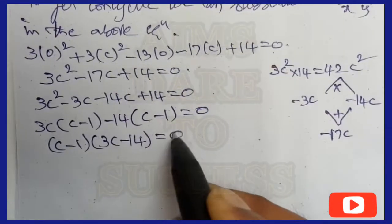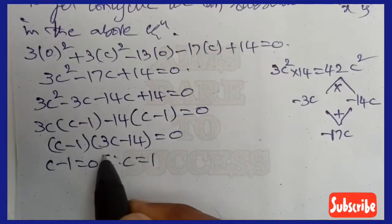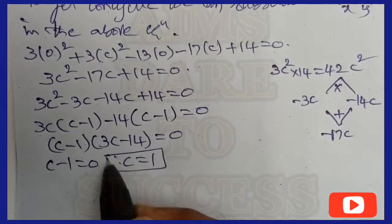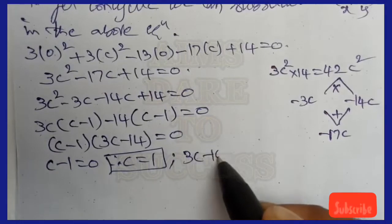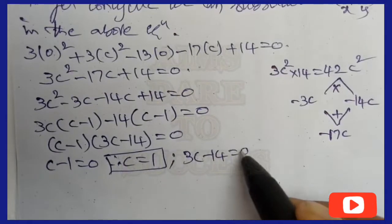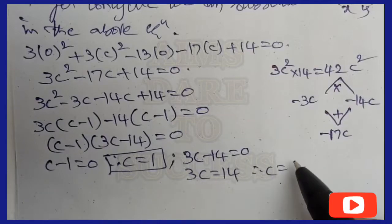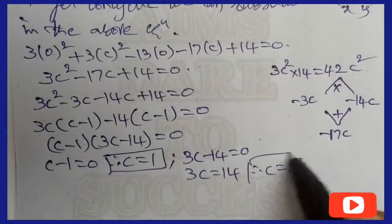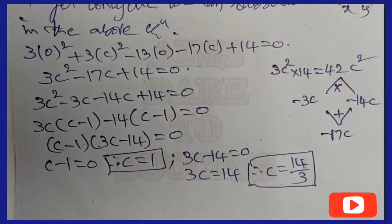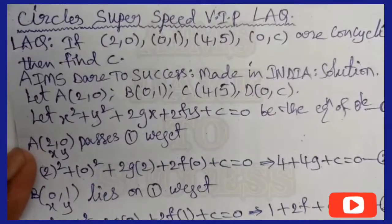Factorizing: 3c(c − 1) − 14(c − 1) = 0, so (c − 1)(3c − 14) = 0. Therefore c − 1 = 0 gives c = 1, and 3c − 14 = 0 gives c = 14/3. We got two values of c. I hope you understand, my dear students.